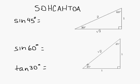The opposite of 45 degrees is 1. The hypotenuse is root 2 because that's opposite to 90 degrees. So that's equivalent to 1 over root 2.